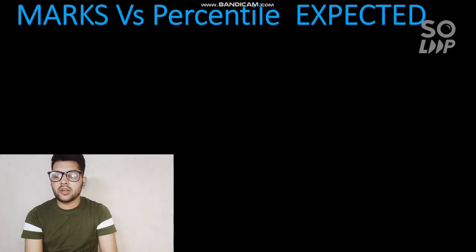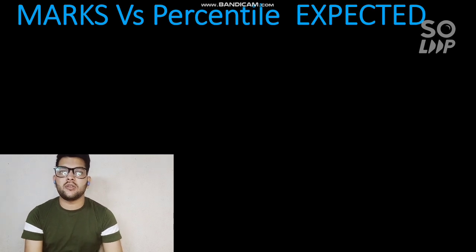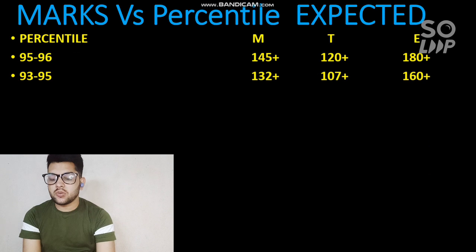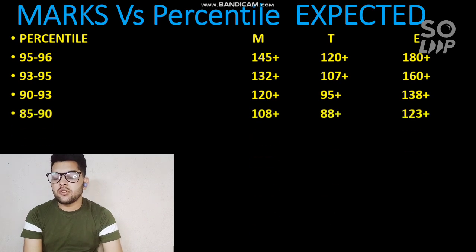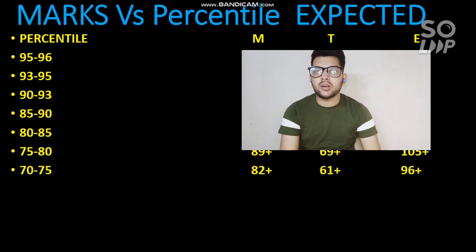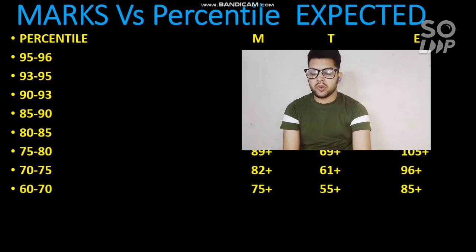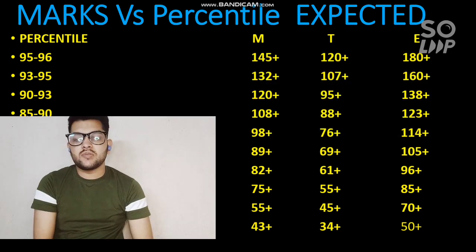Here is more marks versus percentile data going all the way to 40 percentile, because PWD students and SC/ST students can get good colleges with lesser percentile. For 95 to 96 percentile, 145 marks are required for moderate paper. For 93 to 95, marks would be 132 plus. For 90 to 93, marks would be 120 plus. For 85 to 90, marks would be 108 plus. For 80 to 85, marks would be 75 plus. For 50 to 60 percentile, 55 plus marks are needed. For 40 to 50 percentile, 43 plus marks.